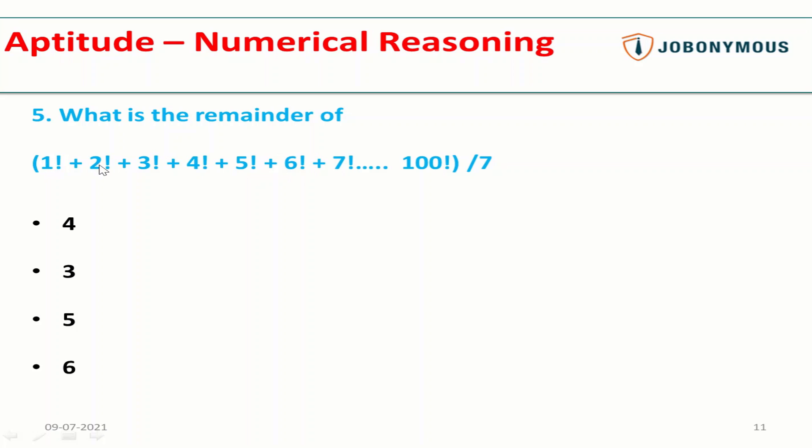So 1! is 1, 2! is 2, 3! is 6, 4! is 24, 5! is 120, 6! is 720, and just divide by 7. So 873 divided by 7, when you divide it, you will get the remainder as 5. This is how you can solve this very tricky question in a matter of just seconds.